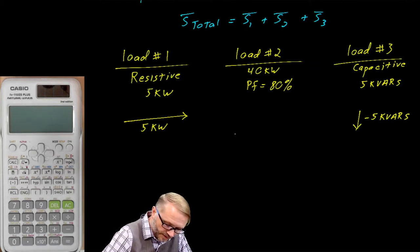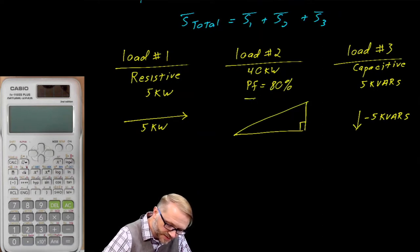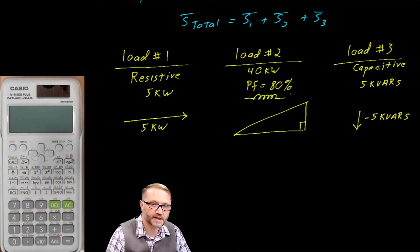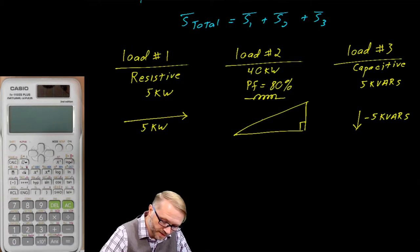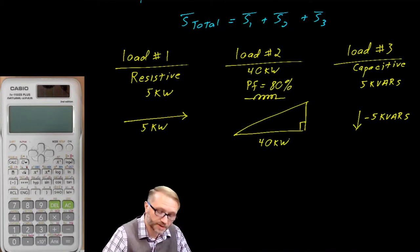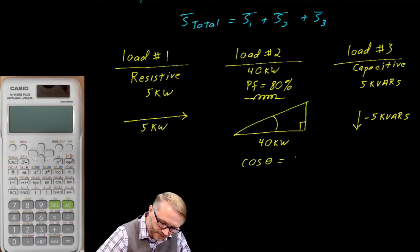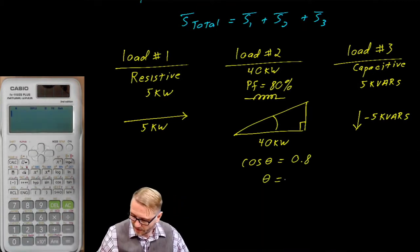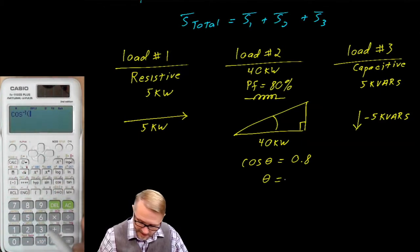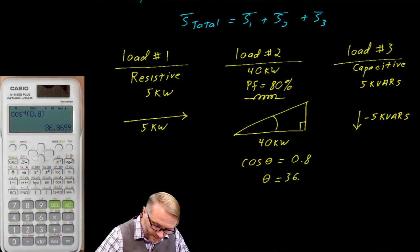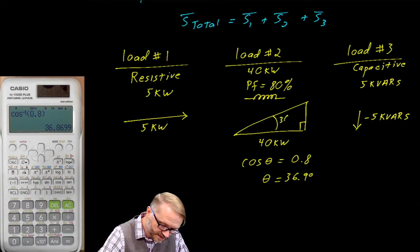The middle load takes a bit more work. We start with a power triangle. I should have specified that this was inductive. Because it's inductive, we know our power triangle is pointing up. The real power, which is the base of the power triangle, is 40 kW. The cosine of theta is equal to 0.8. Solving for theta using the arc cosine gives us 36.9 degrees.